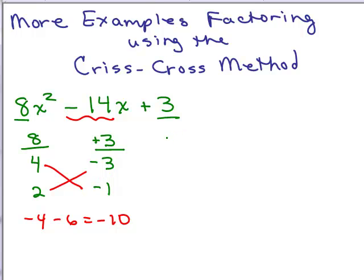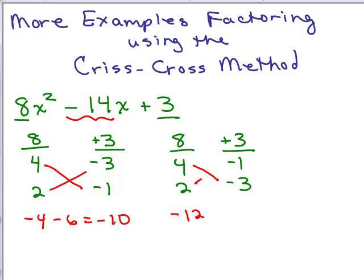Let's try again. Keep the 4 and 2 but switch where the 1 and 3 go — put the 1 and 3 here. Again, they're both going to have to be negative. We do the crisscross again: we get negative 12, and multiplying those out we get negative 2, which gives me negative 14. That's the correct middle term.